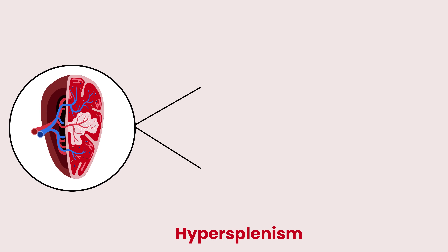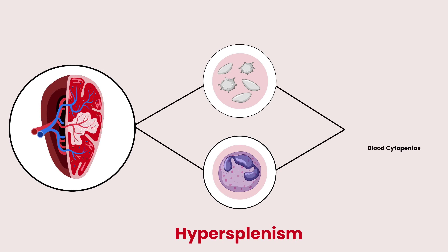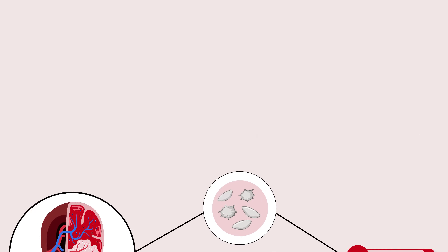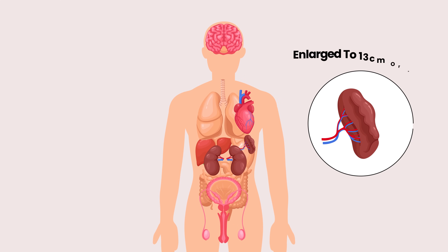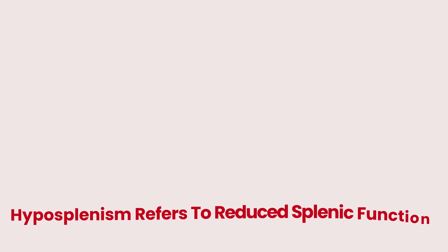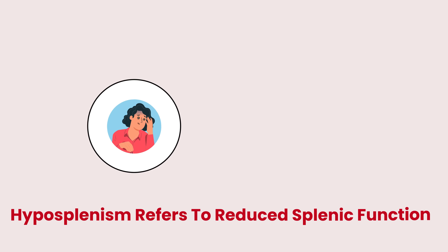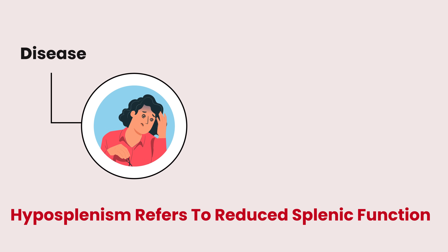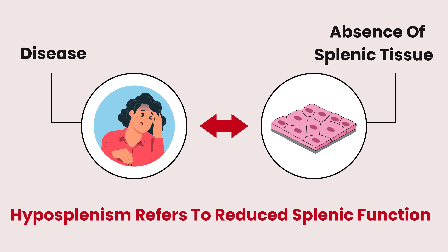Hypersplenism is defined as blood cytopenias or low blood counts, usually neutrophils and platelets, in the setting of splenomegaly, or an enlarged spleen, taken to be more than 13 cm. In contrast, hyposplenism refers to reduced splenic function either from disease or from the absence of splenic tissue.